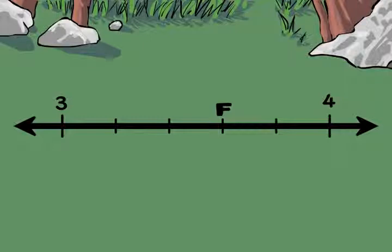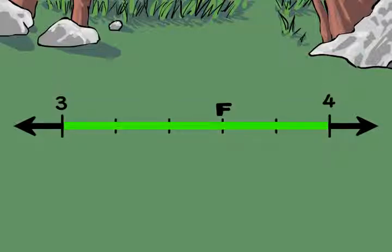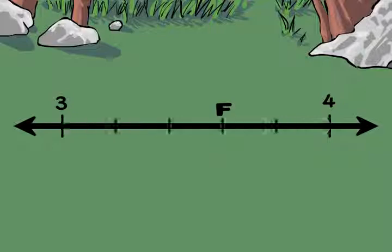Hmm, let's use the three steps to see if you are right. Step one. Identify the benchmark numbers and the interval between them. Three and four are the benchmarks. The interval is one. When one is divided into smaller parts, we're working with fractions.